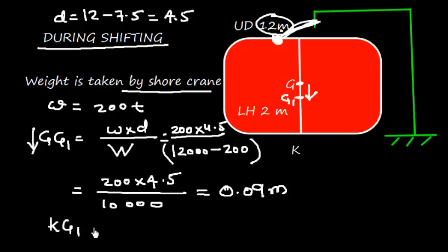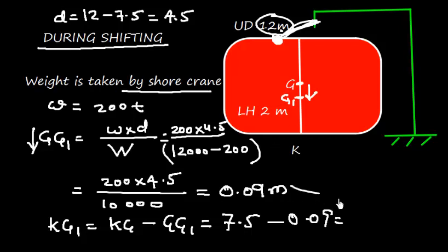Now so KG1 is KG minus GG1. And the KG is 7.5 meter minus 0.09 will give me 7.41 meter.